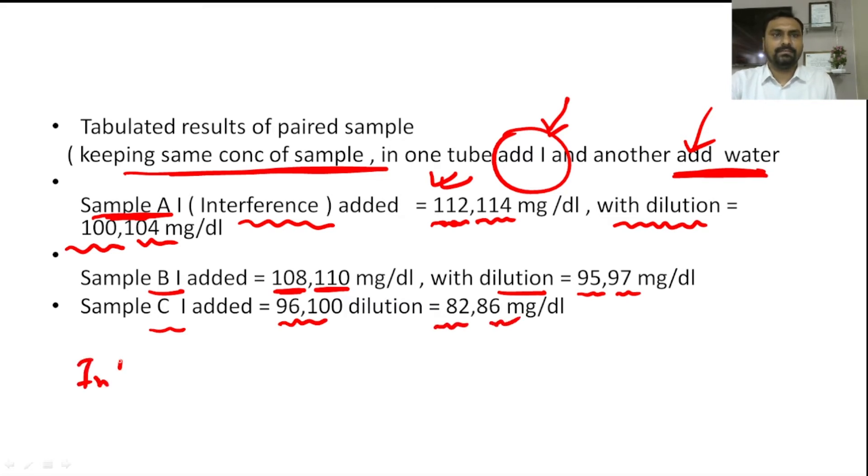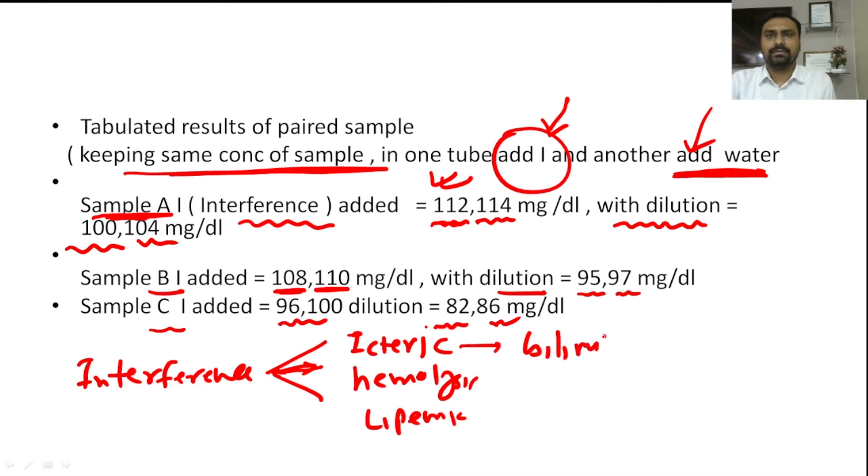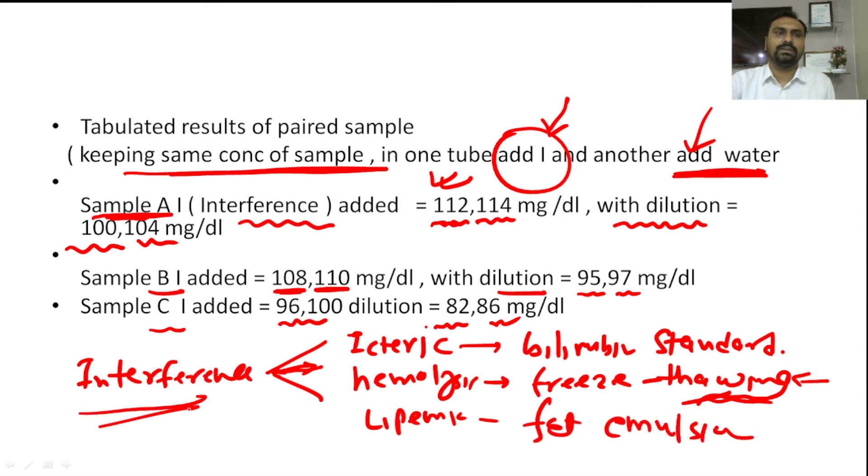Here, this interference material can be Icterus, icteric sample or hemolysis or lipemia. So you can take bilirubin standard that are readily available. For hemolysis, what you can do is freeze the sample and followed by thawing. Thawing will lead to liquification and ultimately we will get the hemolysis sample. And for lipemia, we can use a fat emulsion. So these are the materials that can be used for the interference.